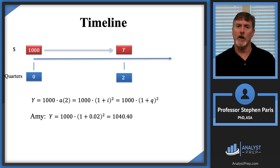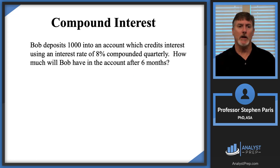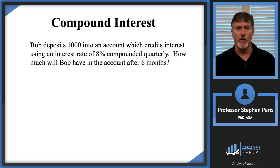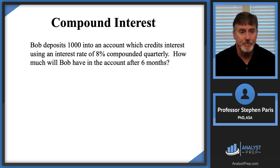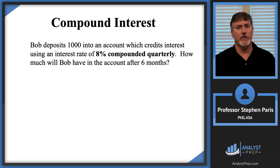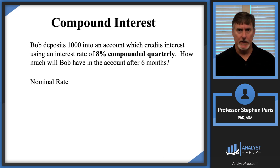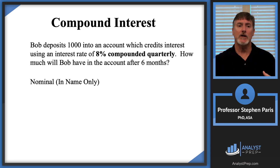Now let's tweak the problem: Bob deposits $1,000 into an account which credits interest using a rate of 8% compounded quarterly. The question is again how much will Bob have after six months? The key distinction here is how the interest rate is stated. When a rate is given as '8% compounded quarterly,' it is called a nominal rate, as opposed to Amy's rate which was given as an effective rate.